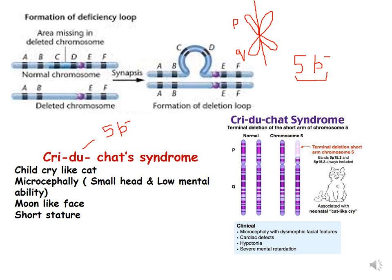They have a moon-like face and short stature. Chromosome number 5 shows deletion of the short arm, which is terminal deletion, and this is represented as 5P-.